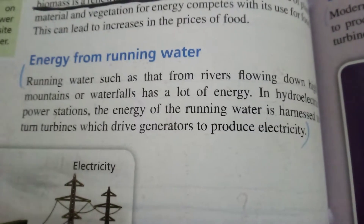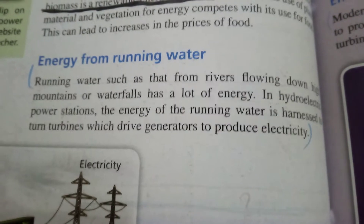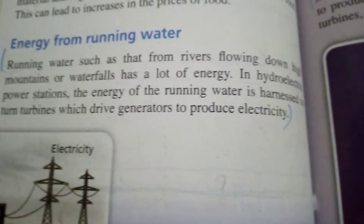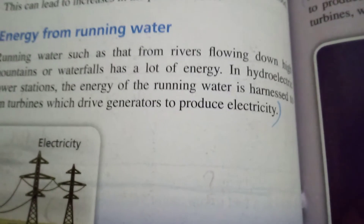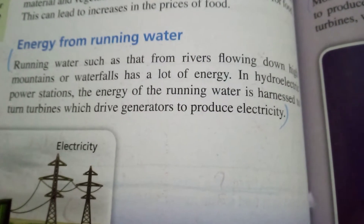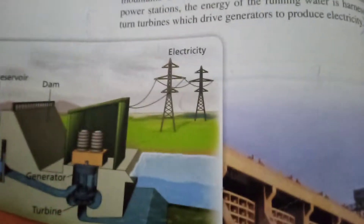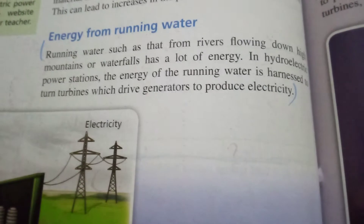The next source is energy from running water. Running water, such as from rivers flowing down mountains or waterfalls, has a lot of energy. In a hydroelectric power station, the energy of running water is harnessed to turn turbines, which drive generators to produce electricity.